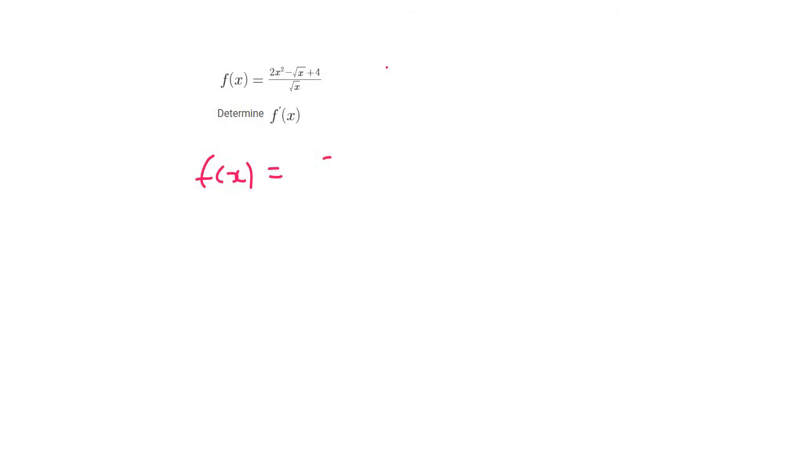So I'm going to write it out like this instead: 2x squared over square root x, minus square root x over square root x, plus 4 over square root x.